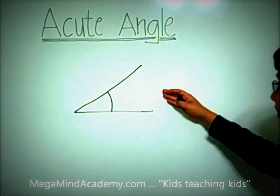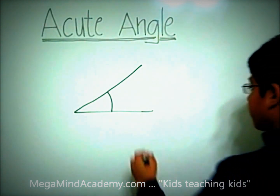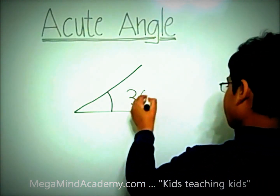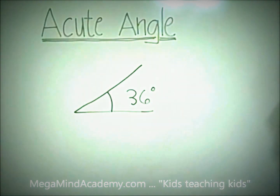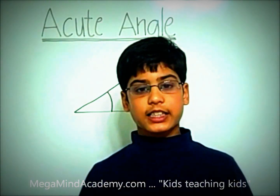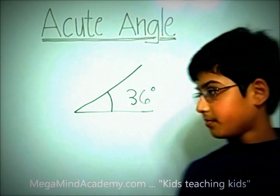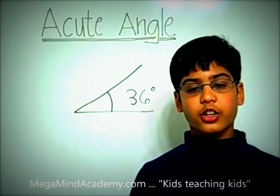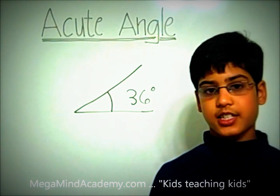Let's say this angle is 36 degrees. Is 36 degrees less than 90 degrees? Yes, 36 degrees is less than 90 degrees.